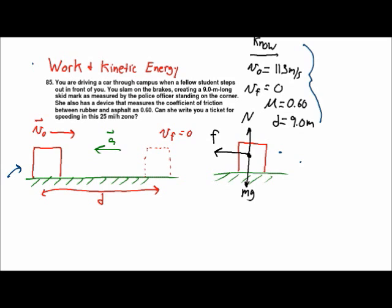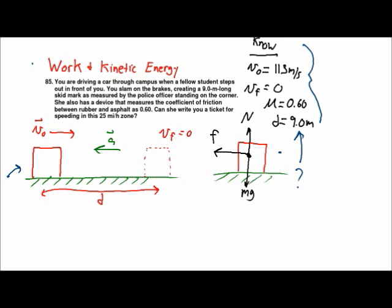the coefficient of friction we're given to be 0.6 and we're told that the skid marks are 9 meters long. Essentially what I'm going to do is try to calculate what the value of the length of the skid marks are for this situation and see if they're 9 meters or not, and then we can decide whether the person was speeding or not.